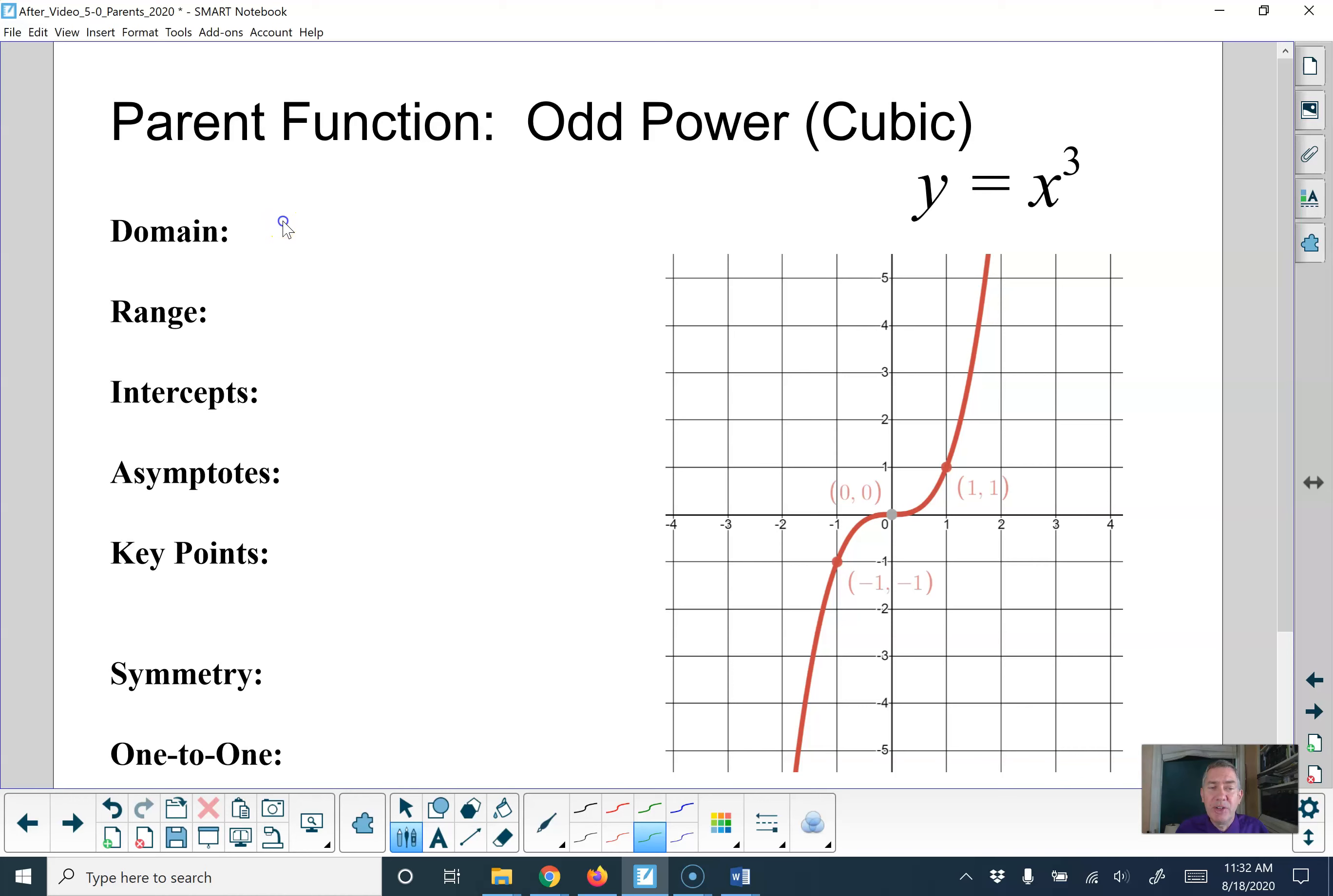They will all have a domain of all real numbers. As you can see, x can be anything. You can see that from the graph that it goes on forever, and you can also see that from the equation because there's nothing dangerous about taking an odd power.